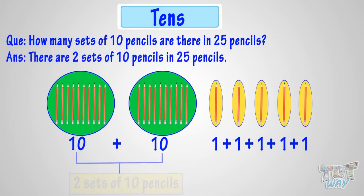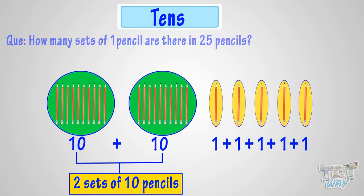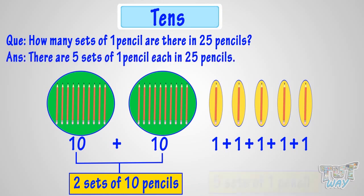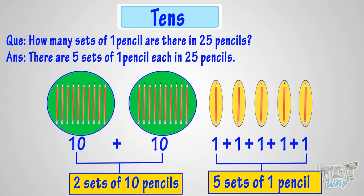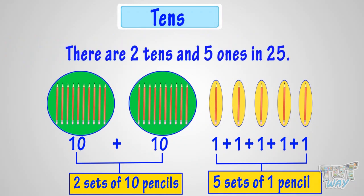There are two sets of ten pencils in twenty-five pencils. And, how many sets of one pencils are there in twenty-five pencils? There are five sets of one pencil each in twenty-five pencils. Good! So, there are two tens and five ones in twenty-five.